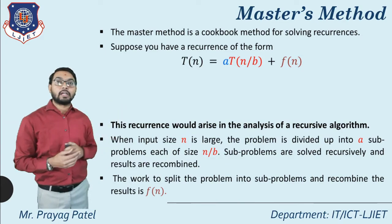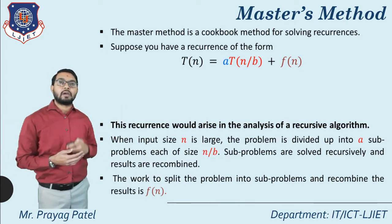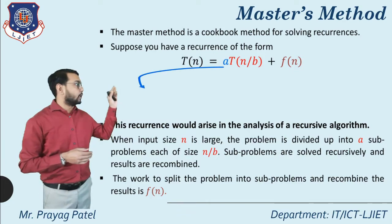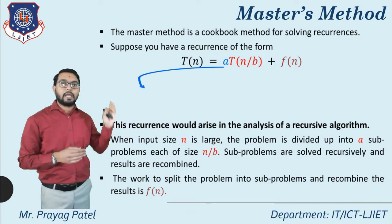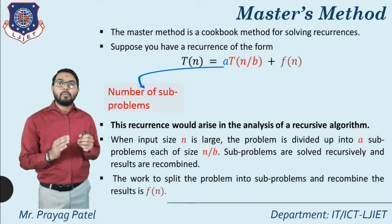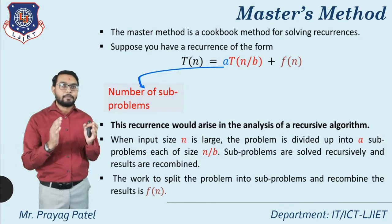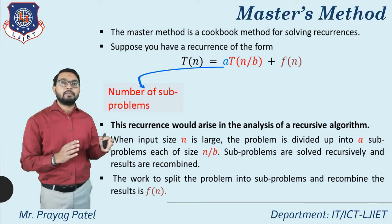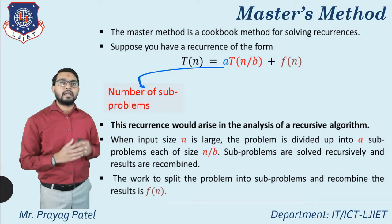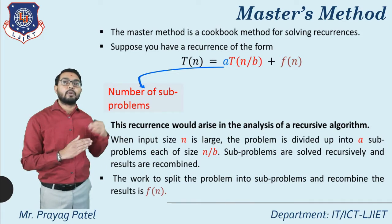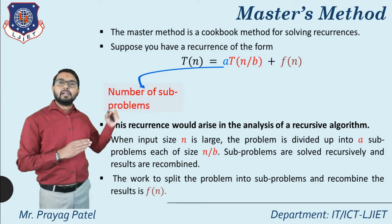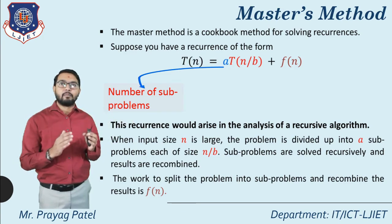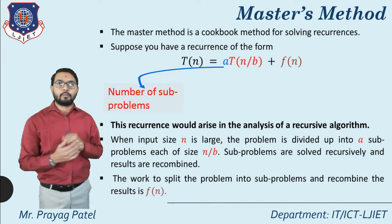Now let's understand the values of a, n/b, and f(n) one by one. The value 'a' means the number of subproblems. When T(n) represents the whole problem and we divide it into many subproblems, the number of subproblems available is considered the value of a.